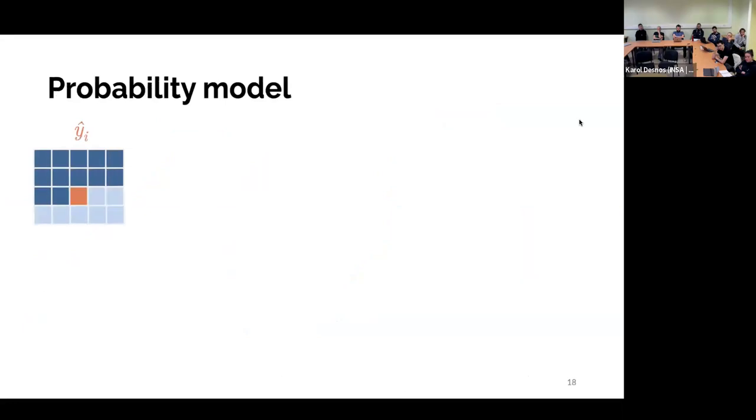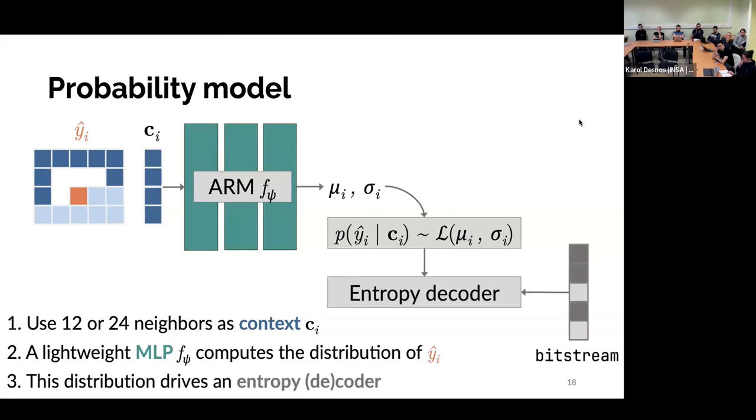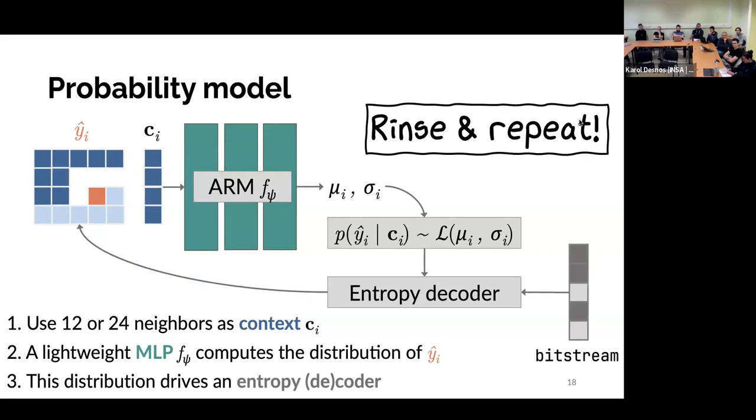Then to retrieve the latent space, we need our probability model. So what we're going to do is, let's suppose that we have already decoded the dark blue pixel. The light ones are not available. We want to know the value of the orange one. So we want to decode it from the bitstream. We're going to use a few neighboring pixels as a context, so usually 12 or 24. These pixels will be fed to an MLP. Once again, very lightweight, a few hundred of parameters. This MLP will compute an expectation and a standard deviation based on the context. So knowing this context, we expect the value of the pixel to be μ, and the standard deviation gives us a sense of uncertainty about the prediction. We'll just model the distribution of yi knowing ci as a Laplace distribution. That will give to our entropy decoder, which will read the bitstream, and output the proper value. And then we repeat the same process for the neighboring values.